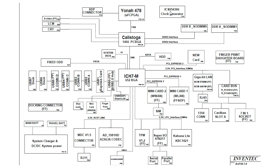Here we have the clock generator IC, which is responsible for generating the clock for the whole motherboard. We also have the DC-to-DC system power section, which contains all power management ICs including the charge IC, 3-volt and 5-volt ICs, and others.